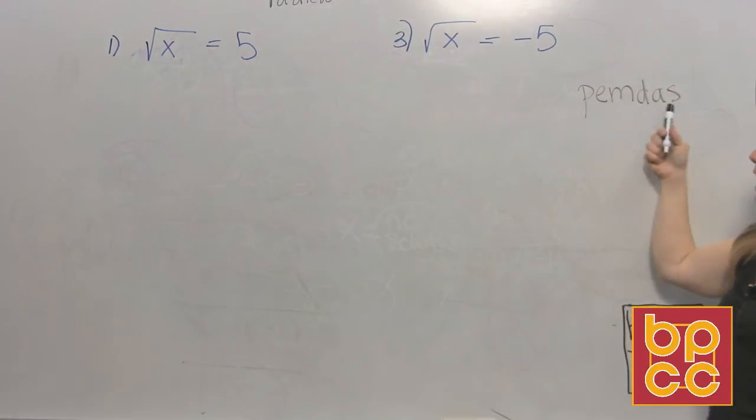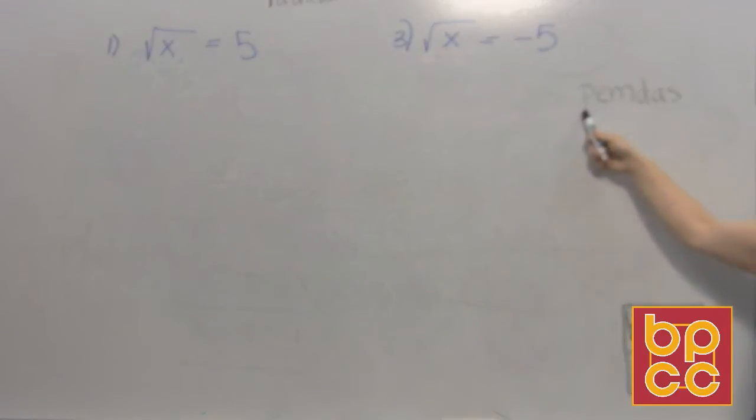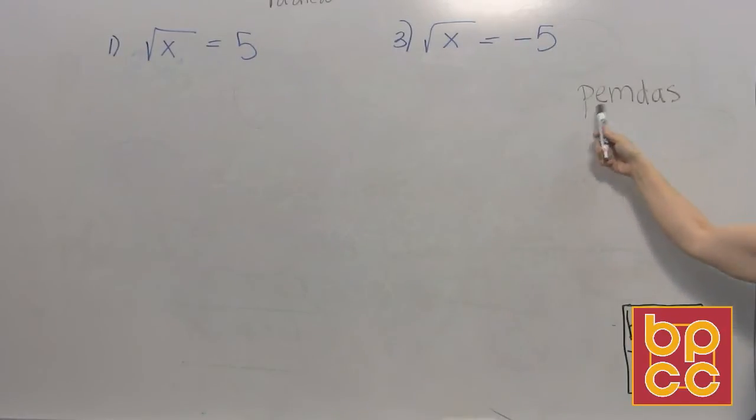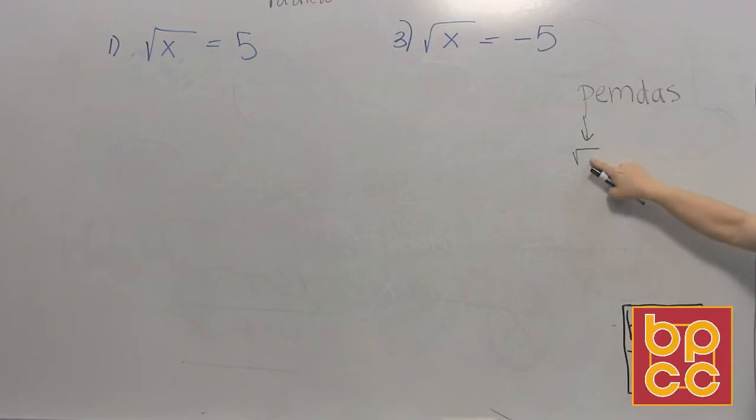Every operation has an opposite. We've seen by working many equations now, the opposite of subtract is to add, the opposite of divide is multiply. The square root symbol falls under the P because it's a grouping symbol. It has an opposite. The opposite of square root is the E, it's the exponent, it's the exponent of 2. So to get rid of this square root symbol today we're gonna do an exponent, we're gonna do a square.